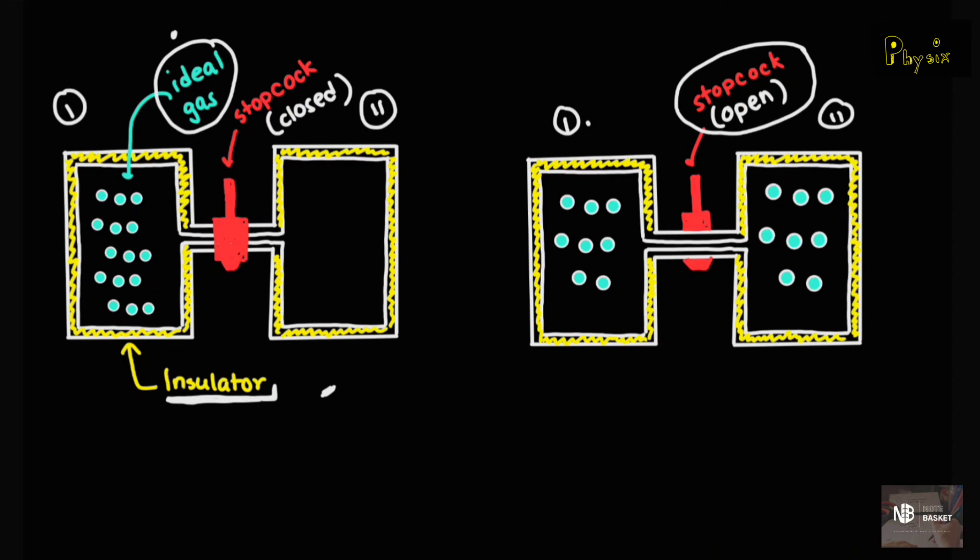Now, we can say that this movement of ideal gas from container one over here to two over here is basically an irreversible process, an irreversible reaction. This is because after the ideal gas has come to container two over here, it cannot go back entirely to container one and attain its initial state of this. Right? And this is why an irreversible reaction has taken place.